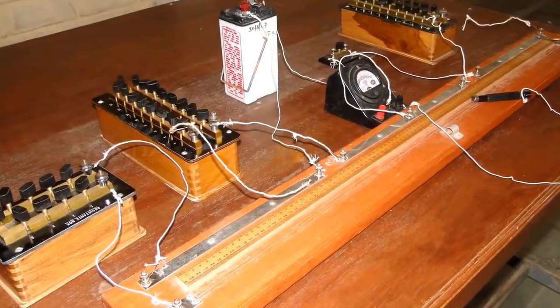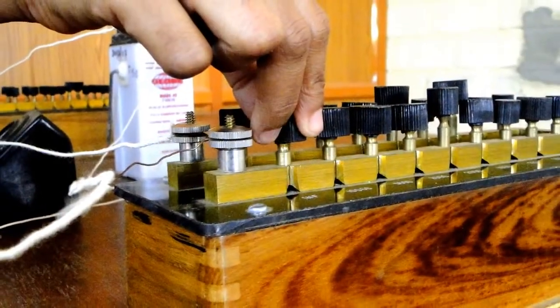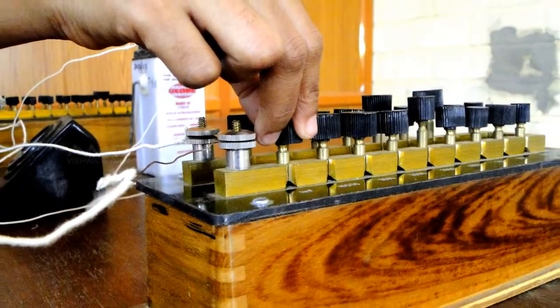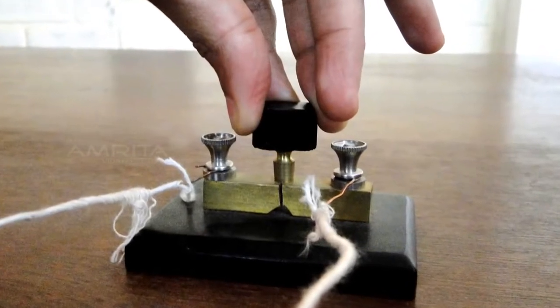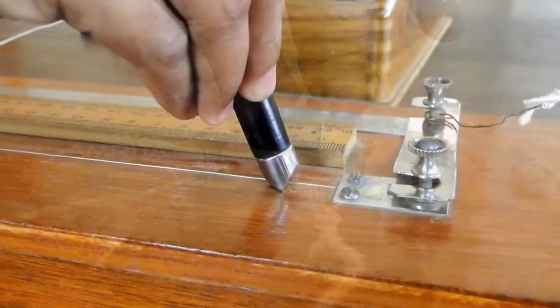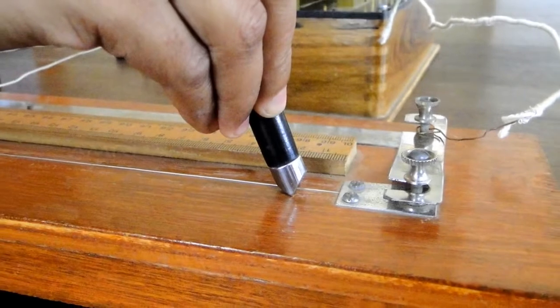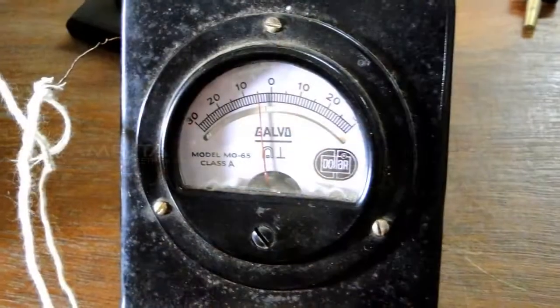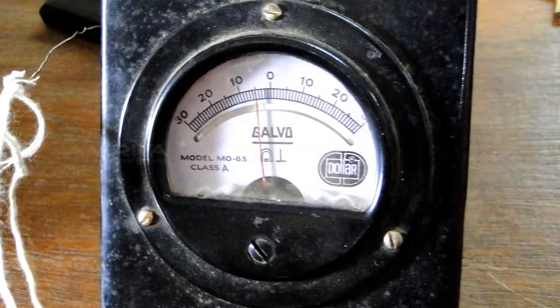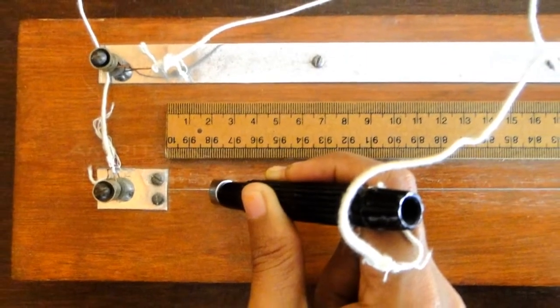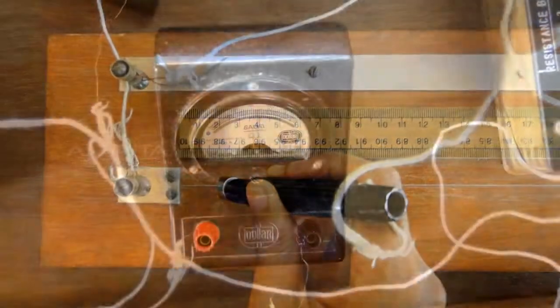Set the resistance of the fractional resistance box to a minimum. Plug in the battery key so that a current flows through the bridge. Press down the jockey so that knife edge makes contact with the wire and observe the galvanometer deflection. Move the jockey to different positions along the bridge wire from left to right. Notice the reading in galvanometer.